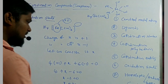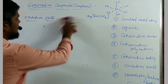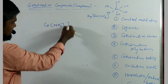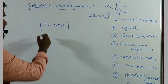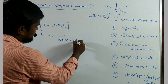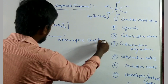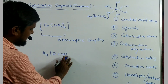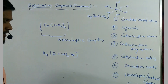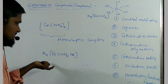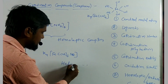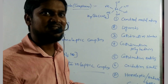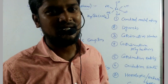The seventh term is homoleptic and heteroleptic complexes. A complex having similar types of ligands — where all six ligands are the same — is called a homoleptic complex. If more than one type of ligand is present in a complex, such as K₃[Fe(CN)₅(NO)], it is said to be a heteroleptic complex. These are the basic terminologies involved in coordination chemistry.